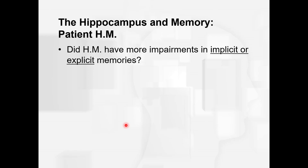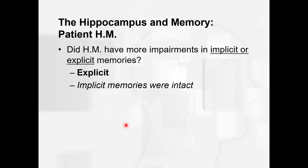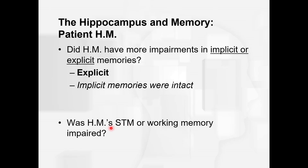So from what we've talked about, did HM have more impairments in implicit memory or explicit memory? Explicit — his implicit memories were intact. Was HM's short-term memory or working memory impaired? It was not; it also remained intact. They were able to give him sets of numbers to work with, and as long as he kept working with them he could hold them in memory, but if he turned his attention away they would be gone.